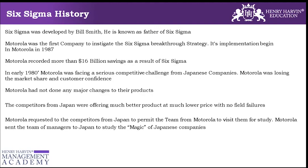Now we will talk about what is six sigma. This is an interesting story about the history of six sigma. Six sigma was developed by Bill Smith — known as the father of six sigma — and the first company to implement it was Motorola, starting in 1987. Motorola came up with the six sigma methodology; prior to that, there were many other problem-solving methodologies being used to resolve issues. But Motorola was the first to give a structured methodology called six sigma.